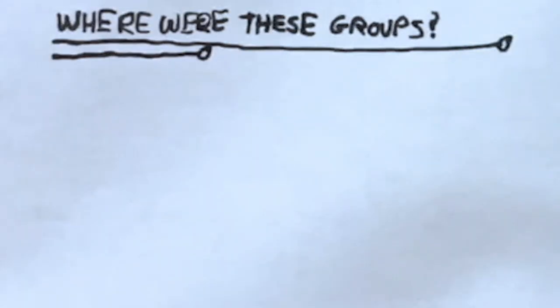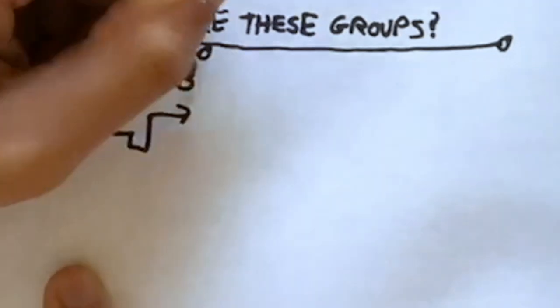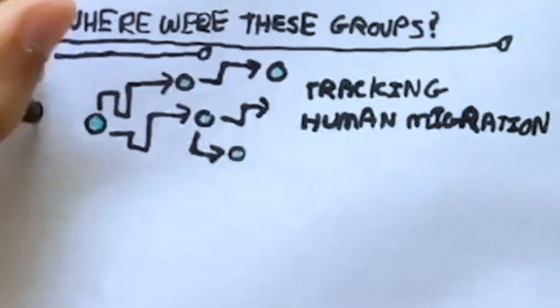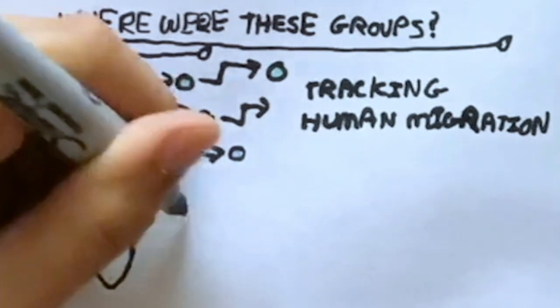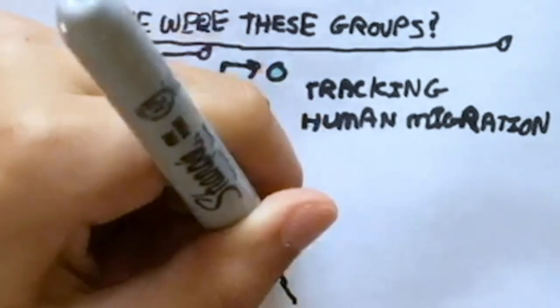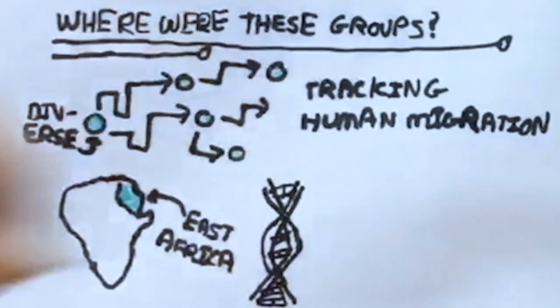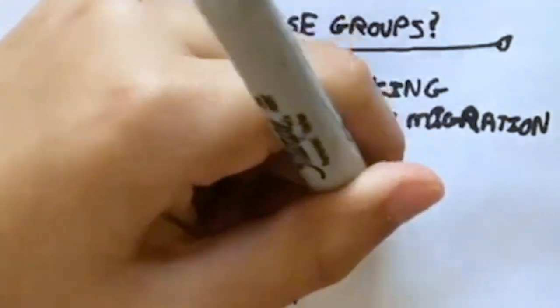But where were these groups? Well, we can trace this back by tracking human migration and seeing which areas are genetically diverse, because these are the original areas where humans would most likely migrate from. Genetic research found that East Africa was the most diverse. In fact, two neighbors in East Africa may have more of a difference in DNA than a person of East Asian descent and Northern European descent.